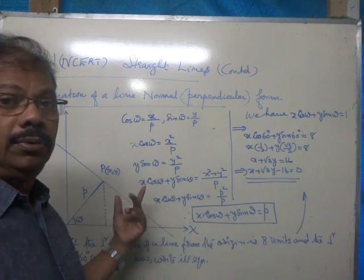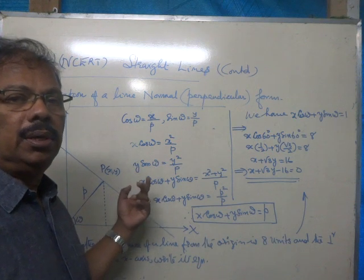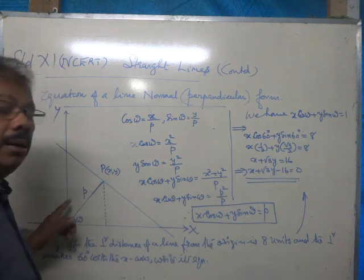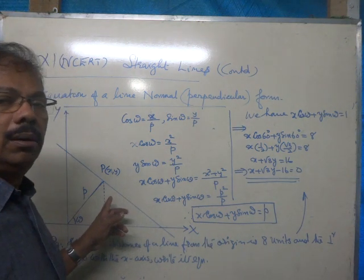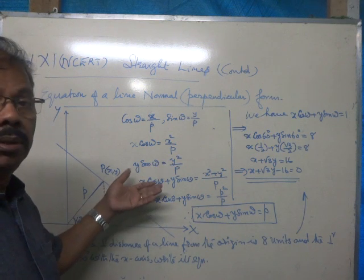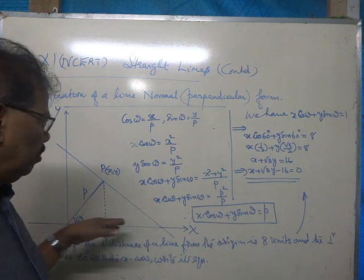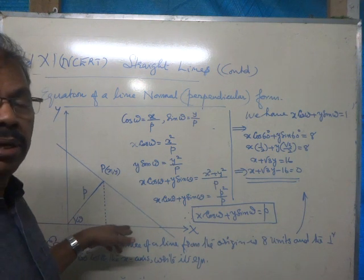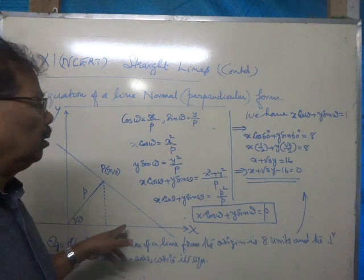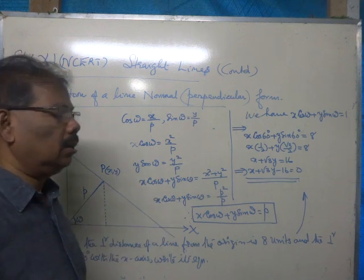the perpendicular distance of a line from the origin is given to be p units. And that perpendicular will be making an angle, omega with the x-axis. We can use omega or theta or alpha, whatever. If the angle made by the perpendicular with the positive direction of the x-axis is omega, then we can form the equation of that line.